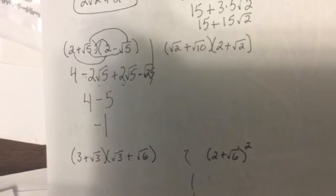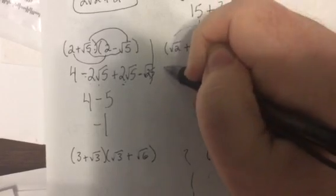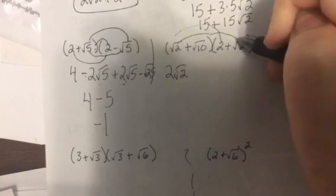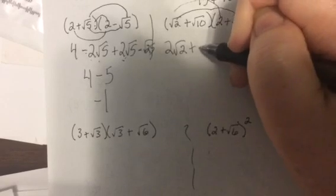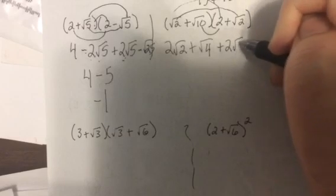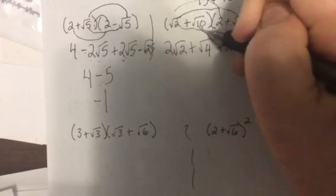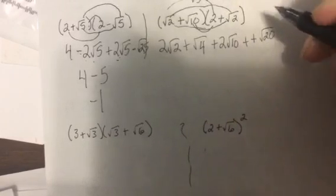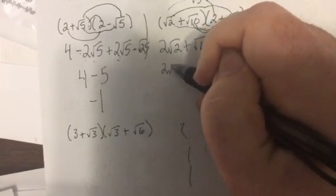Okay, this is part D, part 2. So square root of 2 times 2 is 2 square root of 2, then we have square root of 2 times square root of 2 is square root of 4, then square root of 10 times 2 is 2 square root of 10, then square root of 10 times square root of 2 is square root of 20. Now I cannot simplify this because 2 doesn't have a perfect square, so I'll just write it down.